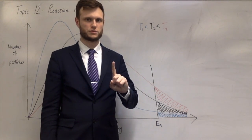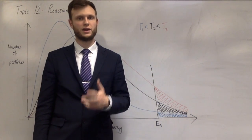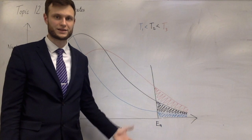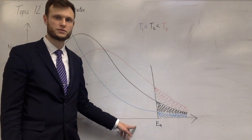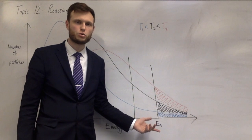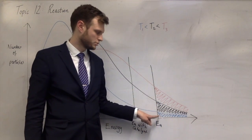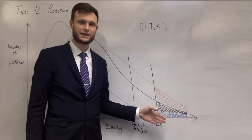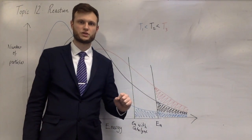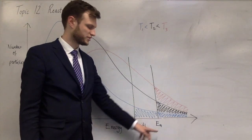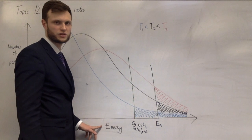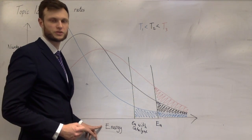There's one other thing you can show on the Boltzmann distribution: why a catalyst, by lowering the activation energy, increases the rate of a reaction. The activation energy of the uncatalysed reaction is higher. If you draw a separate line showing the catalysed reaction's lower activation energy, you can see that at the same temperature, without the catalyst only a few particles can react. If you add a catalyst and lower the activation energy, now approximately twice as many particles can react — so the rate of the reaction increases. If you decrease the activation energy even further, many more particles will have enough energy to overcome it and react, giving a faster rate.